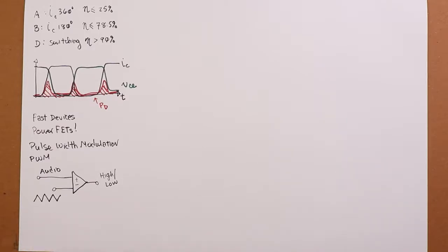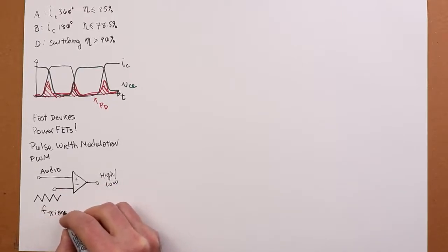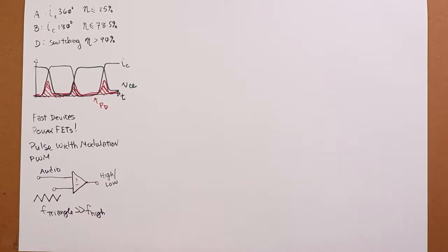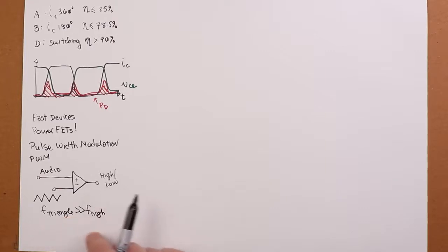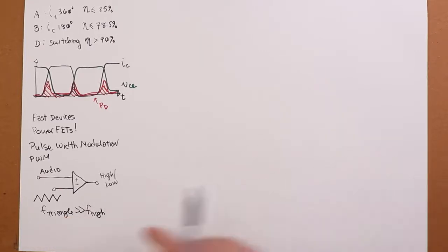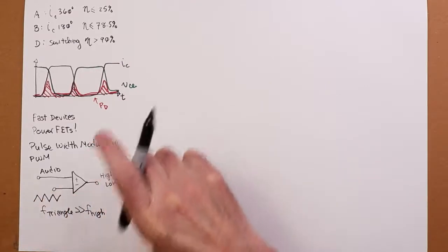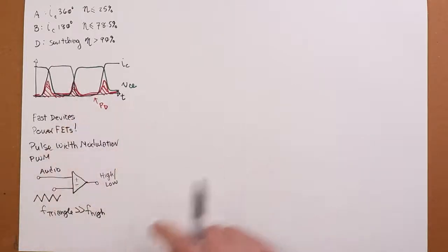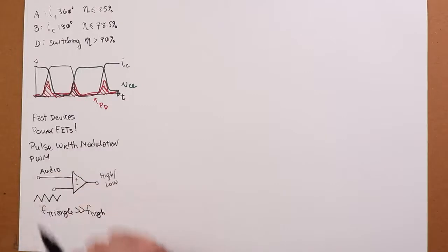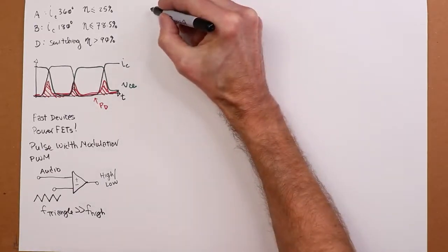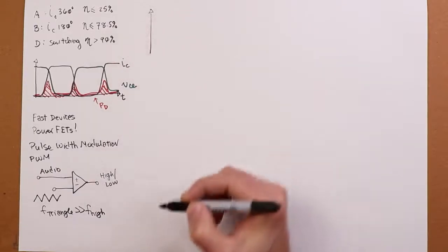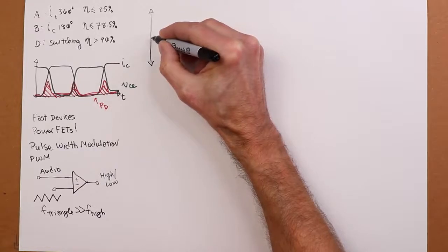The triangle wave that we're going to use has to be much higher than the highest audio frequency that we intend to amplify. So frequency of triangle has to be much greater than the highest audio frequency. For example, if we were going to do a hi-fi kind of thing, 20 kilohertz on the top end for the audio, the triangle wave might be 200 kilohertz, maybe 10 times the size. And this triangle wave, the amplitude of the triangle wave, will be the full amplitude of the input, the maximum input or close to the maximum input of the audio signal.